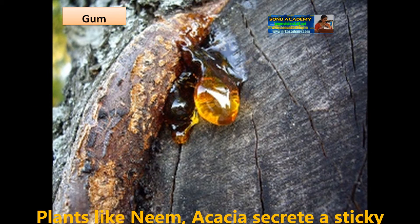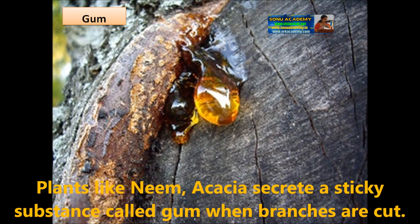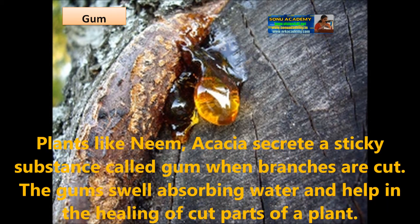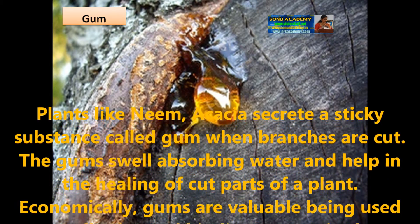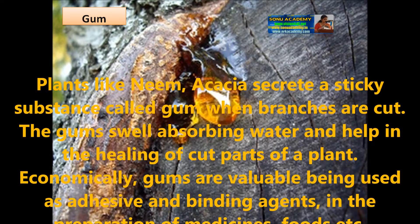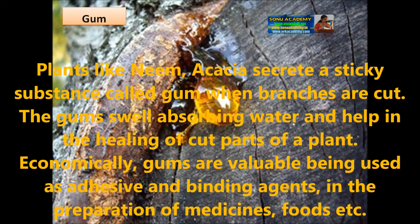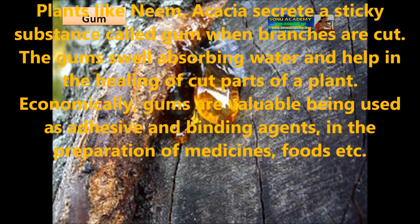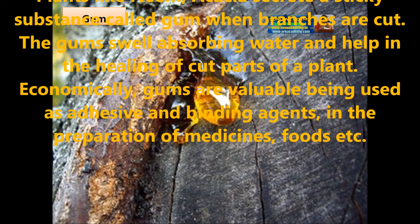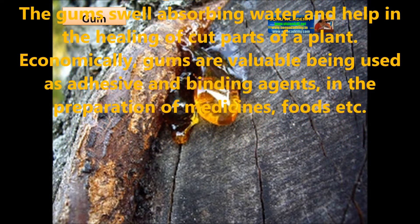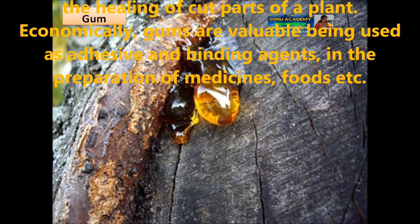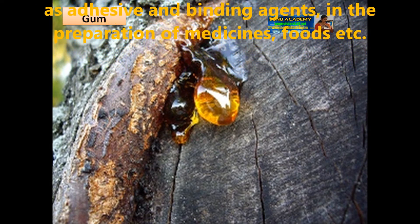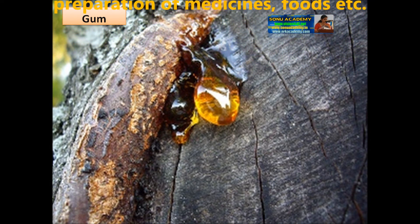Gums: plants like neem and acacia secrete a sticky substance called gum when the branches are cut. The gums swell by absorbing water and help in the healing of cut parts of the plant. Economically, gums are valuable, being used as adhesive and binding agents in the preparation of medicines, foods, etc.